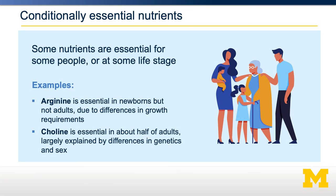Choline is another example. Choline is essential in about half of adults, largely explained by differences in genetics and sex. Some people have very active forms of the enzyme that can make choline, and for those people, choline is not essential. However, if you have a less active form of that enzyme, you cannot make sufficient amounts of choline and must therefore obtain it in your diet.